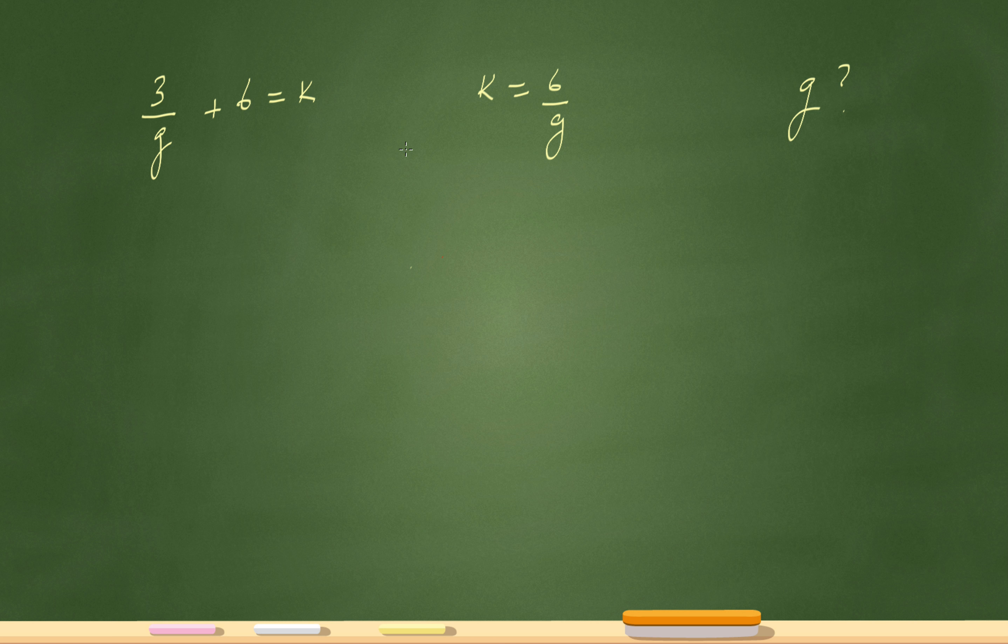Nothing too crazy happening here. It tells me what the value of k is—it tells me that k is 6 over g. So see that k right there? Instead of that k, I'll just replace that with 6 over g, and then I should be able to solve for g on this end.